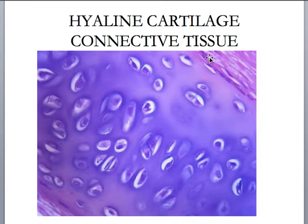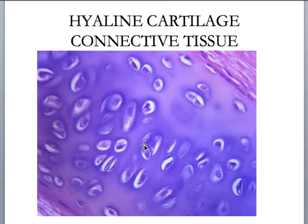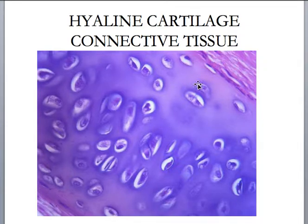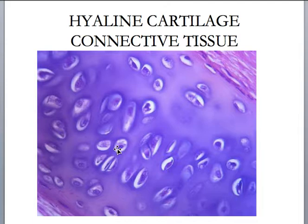We have to get diffusion of nutrients from the perichondrium through this ground substance and to the cells. So hyaline cartilage is actually very difficult to heal. If you injure any cartilage, it takes a long time for healing to happen because of that very slow diffusion of nutrients through this semi-rigid, semi-solid ground substance. But that ground substance pretty much carries out the functions of the hyaline cartilage.